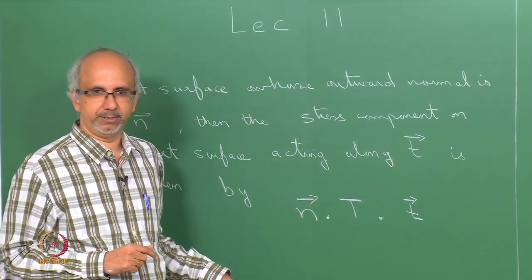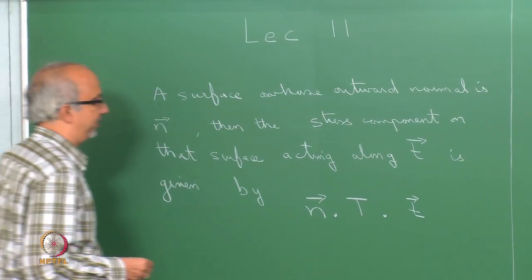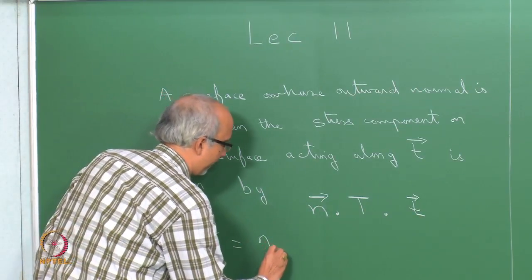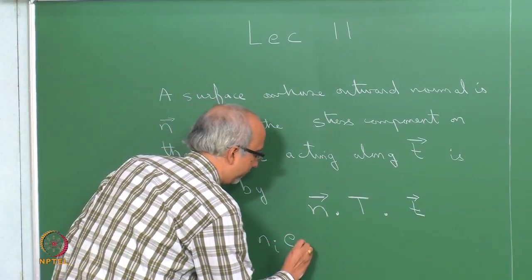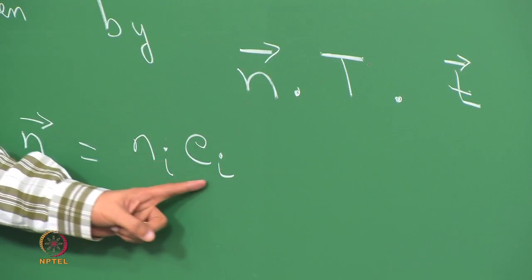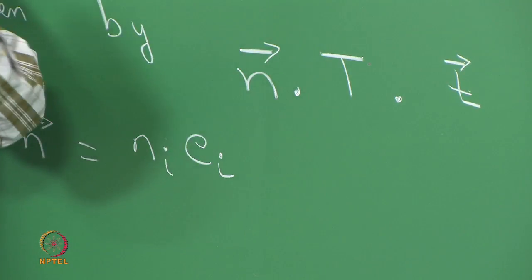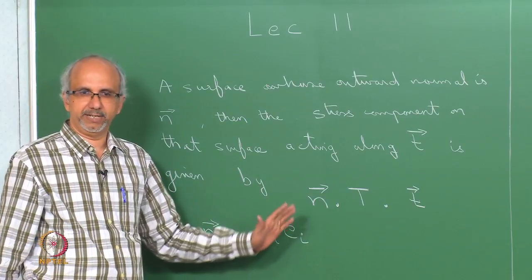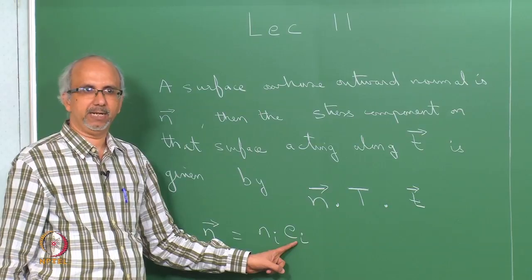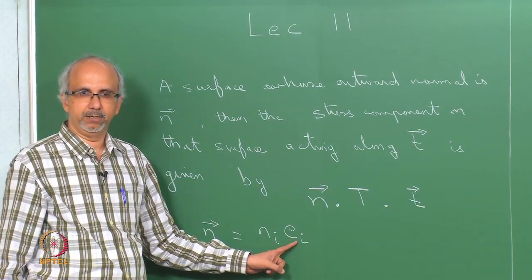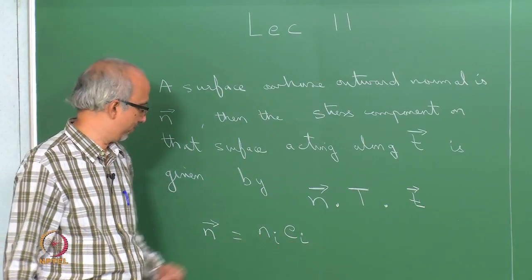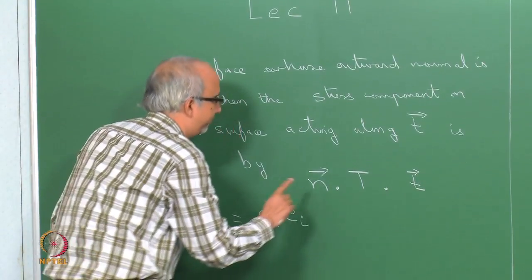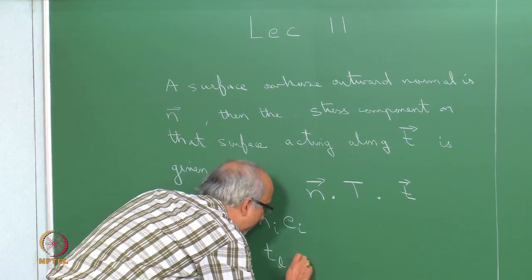I am going to explain how this is actually evaluated. N is going to be written as N_i E_i, where E_i are the unit vectors. For simplicity, assume a Cartesian coordinate system, keeping it in terms of i, j, k — unit vectors in the three classical directions x, y, z, or r, theta, z depending on whether it is cylindrical or Cartesian. Similarly, T is a vector written as T_L E_L, where L goes from 1 to 3.